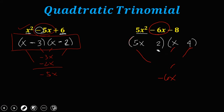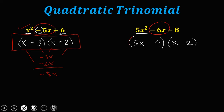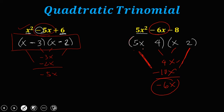Rearranging: place 4 on the other side and 2 on this side. Checking again: 4 times x gives 4x, and 5x times 2 gives 10x. To get negative 6x, we need 4x plus negative 10x. So the 2 must be negative and the 4 positive. This is now the correct factoring of the second quadratic equation.